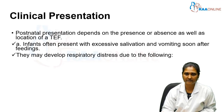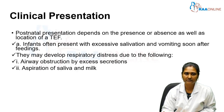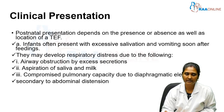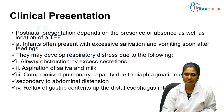They may develop respiratory distress, which may be due to airway obstruction because of excessive secretions, aspiration of saliva or milk, compromised pulmonary capacity due to diaphragmatic elevation secondary to abdominal distension, and reflux of gastric contents up the distal esophagus into the lungs. These are the reasons for respiratory distress in the newborn immediately after the postnatal period.